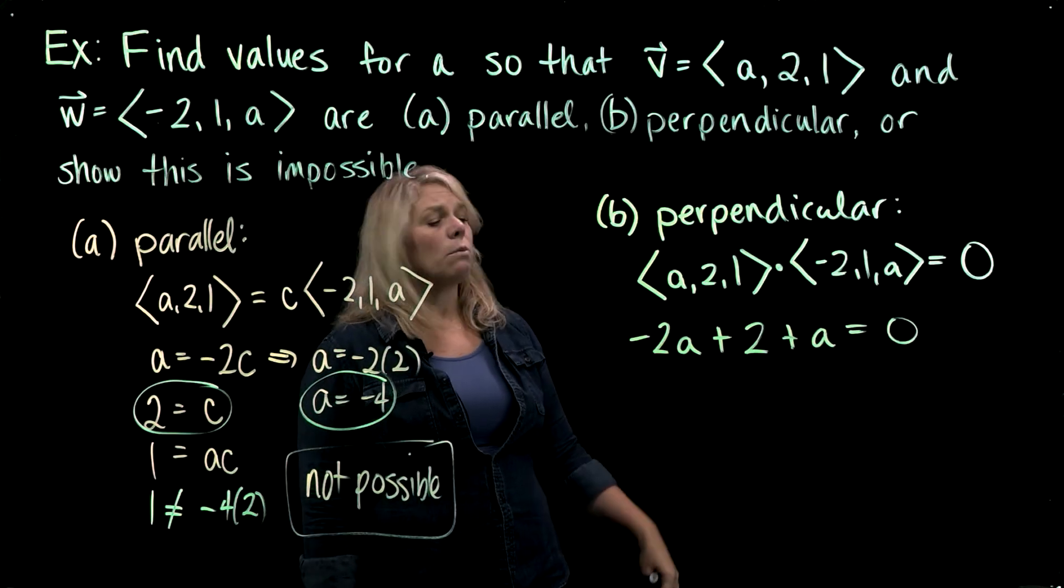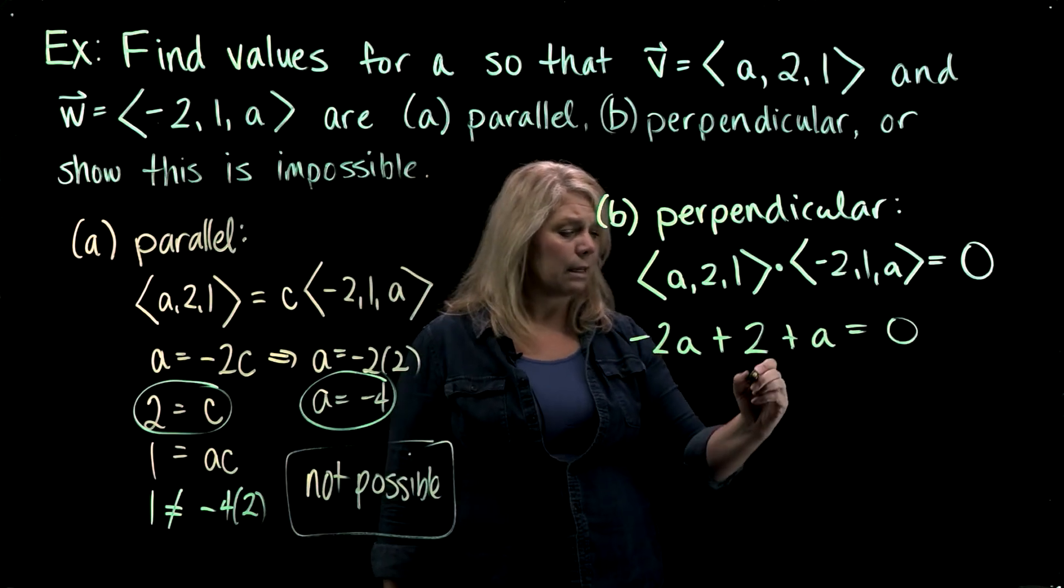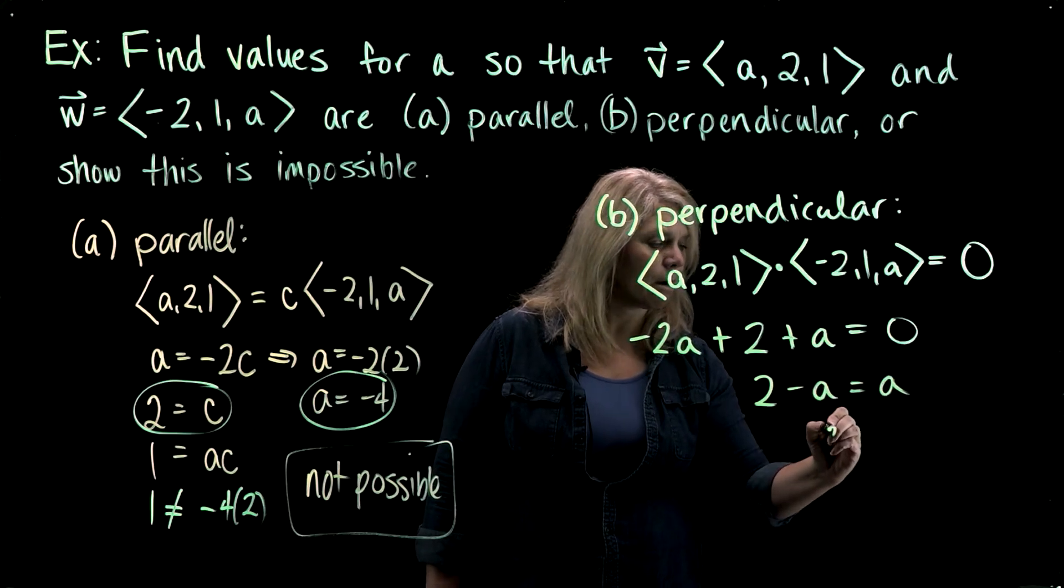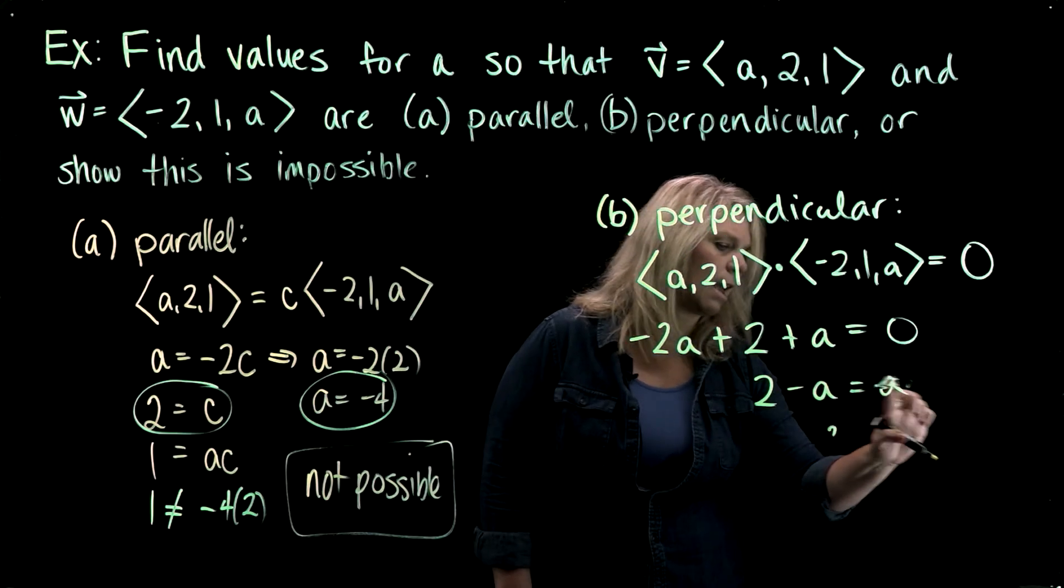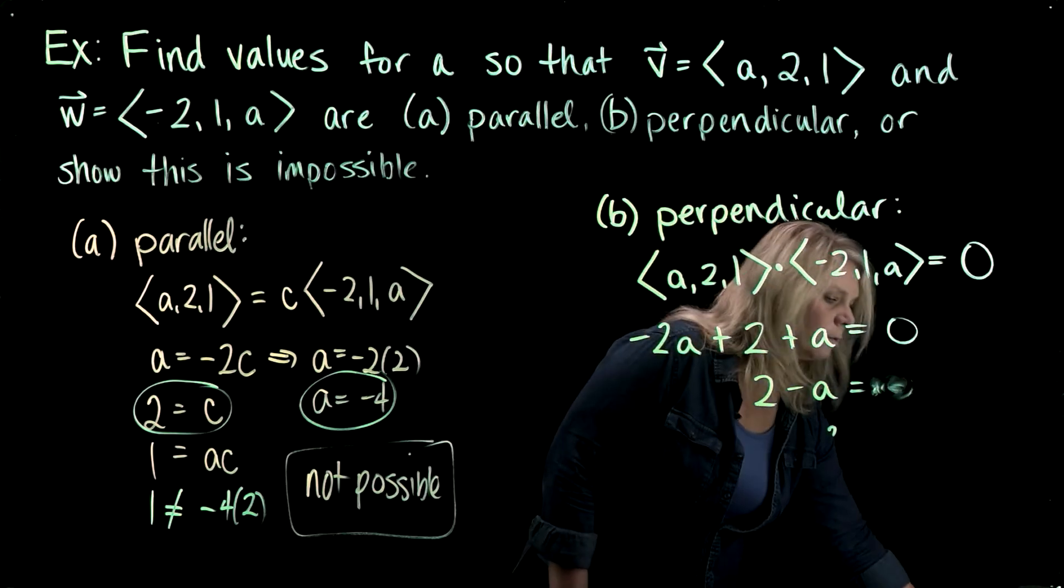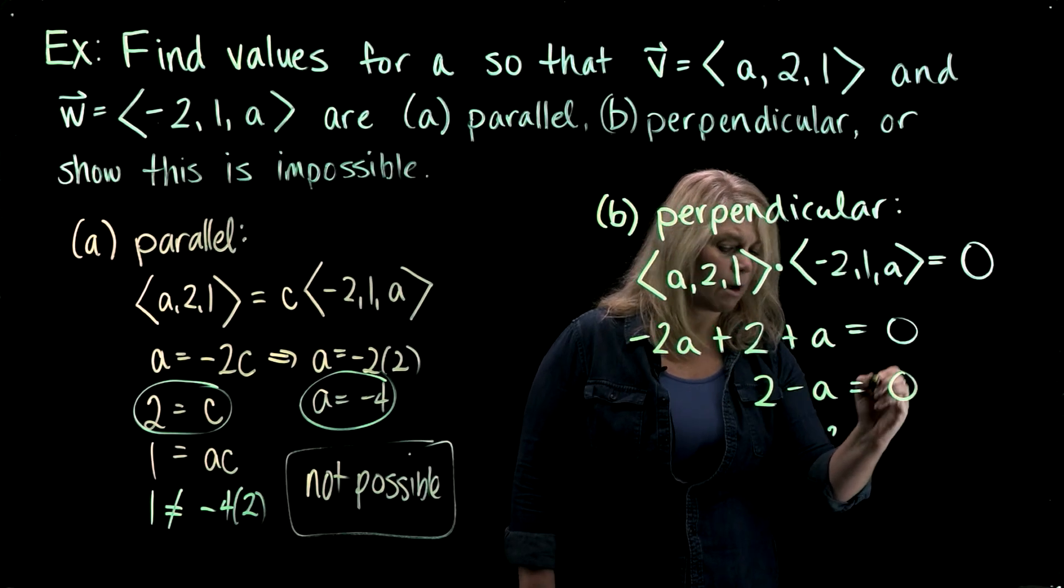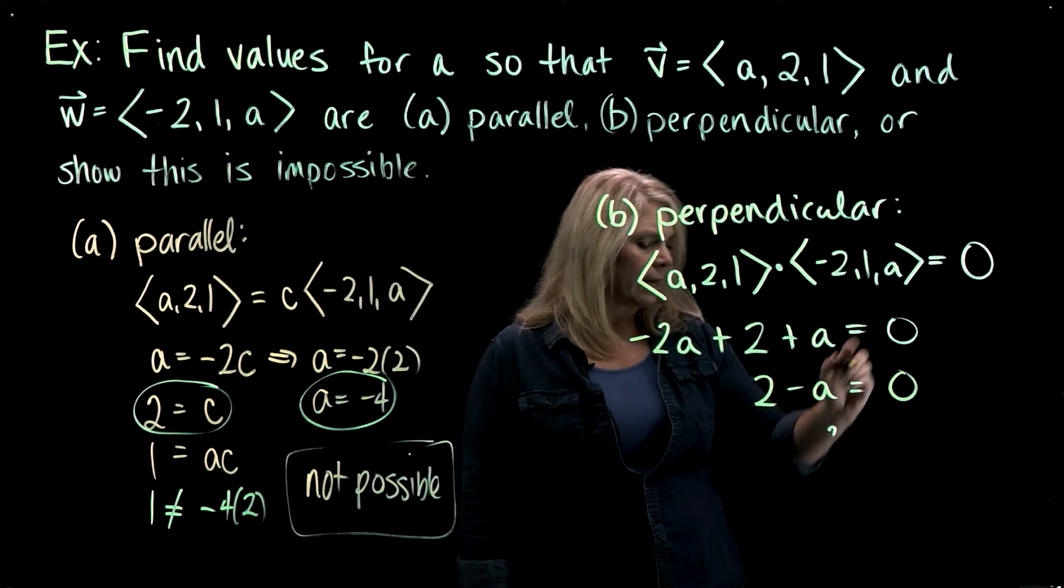And here I just have one equation, one unknown, so I can just solve that. If I simplify the left side here, I get two minus a equals zero.